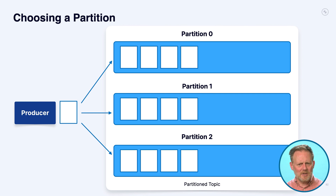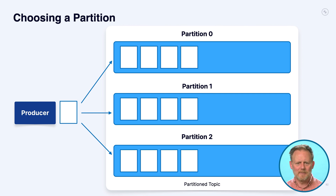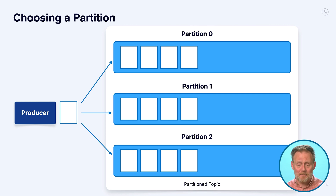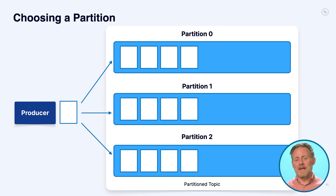Earlier we talked about partitions — when you're writing, you have to decide which partition, through hashing, round-robin, and so on. It's the producer library that makes that decision — it does the hashing and decides on the partition to send the message to. That's another thing being done by the producer code.